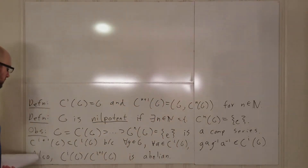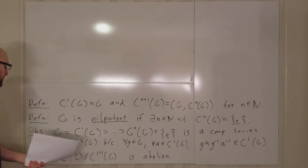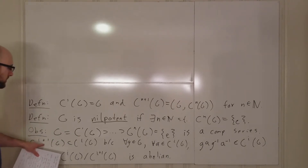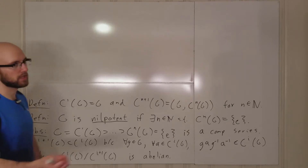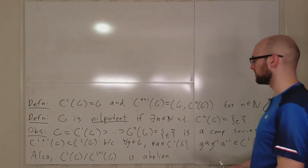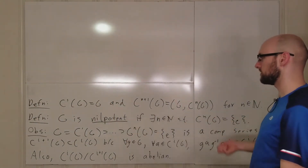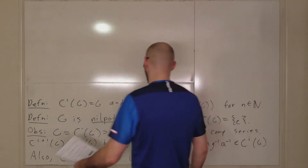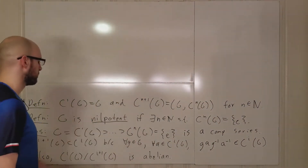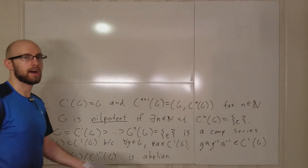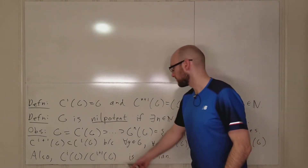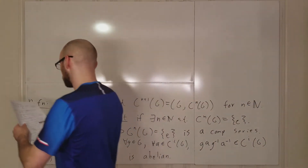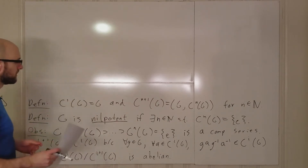For every i between 1 and n minus 1 we have this composition series. Each of the C_i's is actually normal in the overall group — we talked about that. We also talked about why these quotients are abelian.